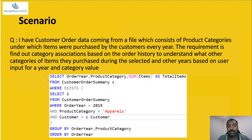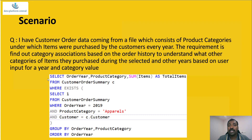The scenario involves customer order data from a file which consists of product categories. It indicates the items purchased by different customers and which product category they belong to over different years — for example, how many items they purchased from Apparel or Fitness in 2019. The intention is to track the categories customers are interested in, and find category associations: if a user buys a particular category, what are the other categories they are always interested in?